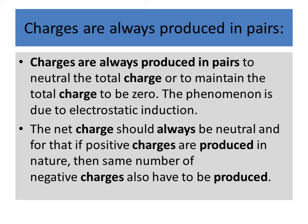Charges are always produced in pair. That means equal number of positive charge and equal number of negative charge have to be produced. So the net charge or total charge on the objects is zero. Charges are always produced in pair in order to maintain the total charge to be zero.